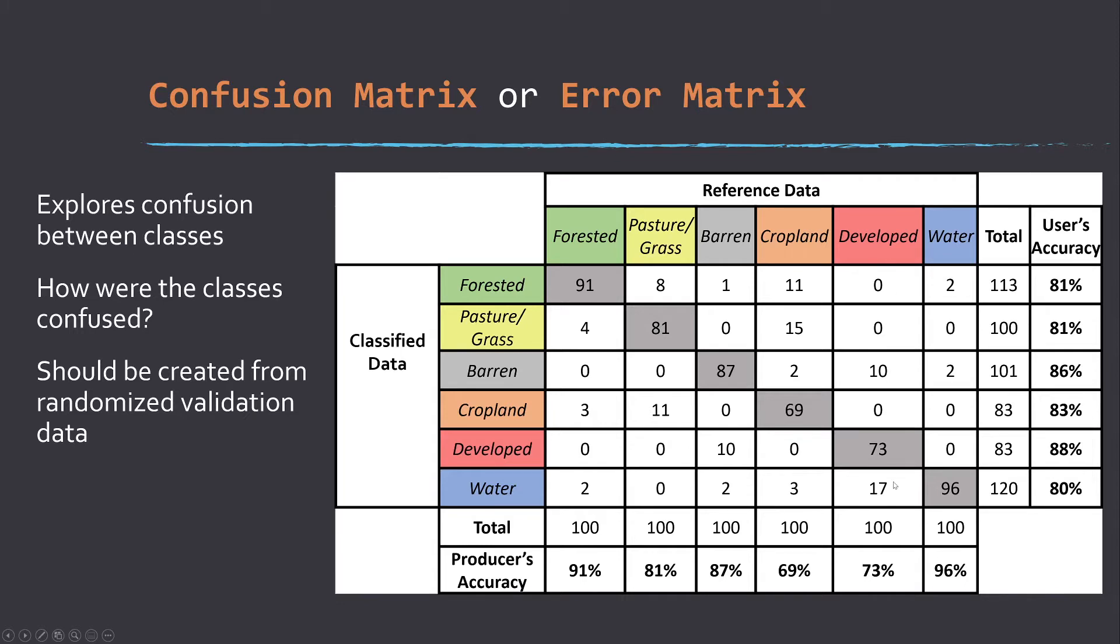Here we see some confusion between developed areas and water, and then the areas where there aren't a lot of confusion. For example, there's not a lot of confusion between forest and developed. Let's now talk about the type of metrics that we can derive from the error matrix.